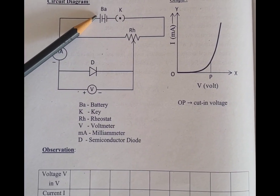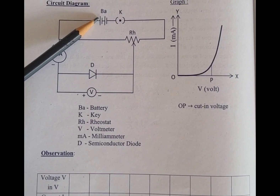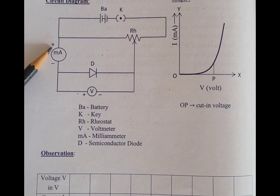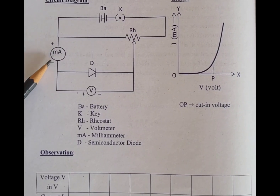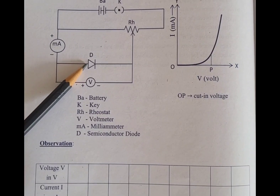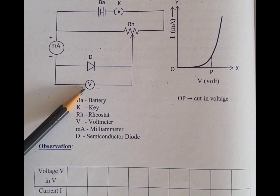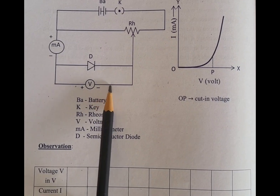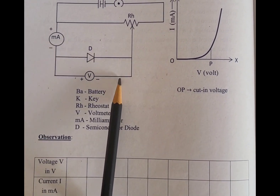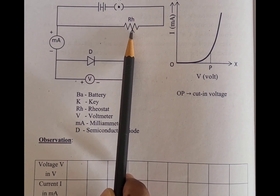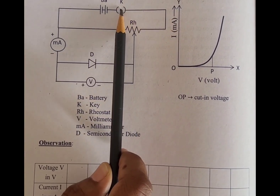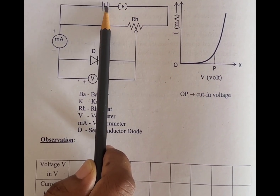For the connections, from the battery positive we take two wires: one wire goes to the lower end of the rheostat, and another wire goes to the milliammeter positive. At the milliammeter negative, two wires go out: one to the diode positive, and another to the voltmeter positive. From the voltmeter negative and the diode negative, two wires together connect to the upper end of the rheostat. The lower end of the rheostat connects to the plug key, and the plug key connects to the battery negative.